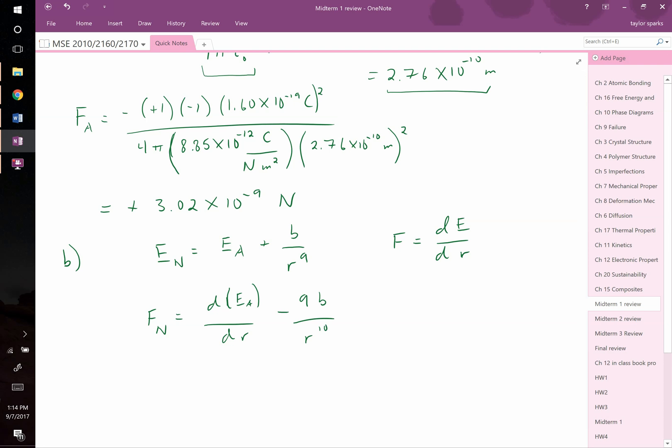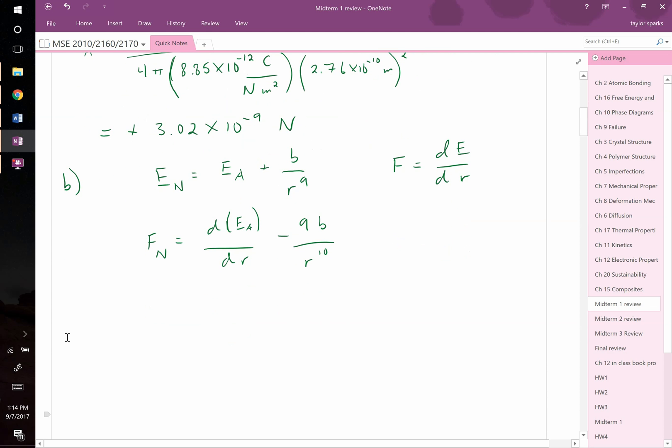So now we have an expression for our force. What we can next do is we remember that at equilibrium, when these ions are touching one another, that the net force is equal to 0 at equilibrium, because the ions aren't moving apart or closer together. If there was a net force, they would be moving either closer together or further apart. But since they're at equilibrium, we can set that equal to one another. And we already solved for the force, the attractive force.